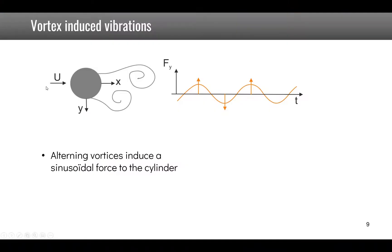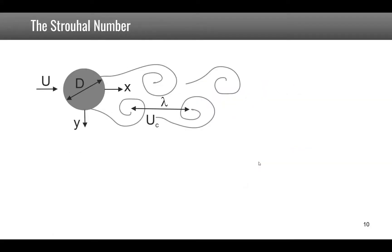Now when the flow hits the cylinder it results in alternating vortices which induce a sinusoidal force to the cylinder. The frequency of this force is related to the wind speed through the relationship fv is equal to St over d times U where St is the Strouhal number.